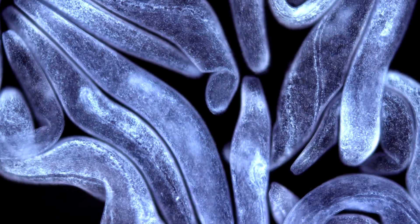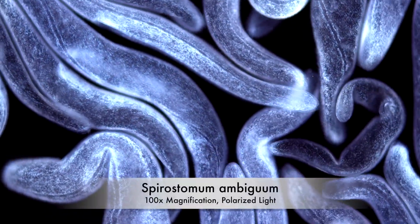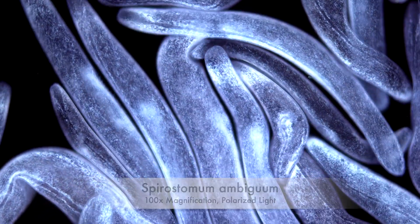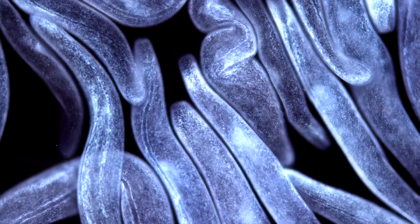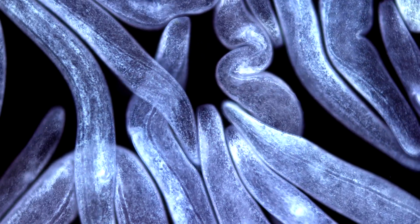Spirostomum is a unicellular ciliate. Spirostomum is around 2 to 4 millimeters in length and can be found at the bottom of many ponds. Its rather big size makes it a single cell visible to the naked eye.